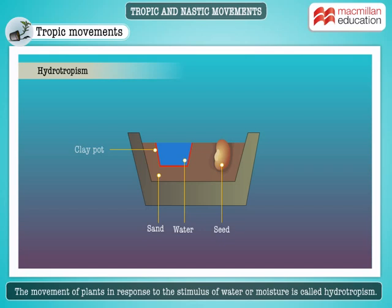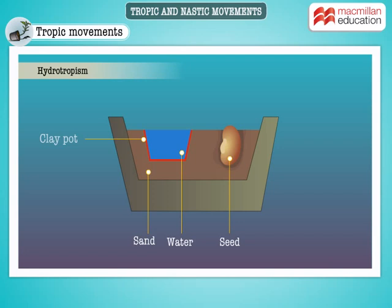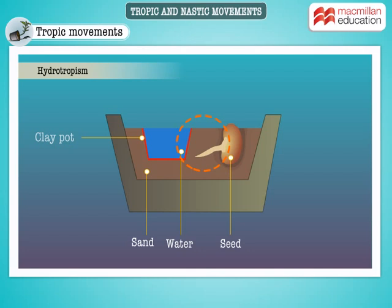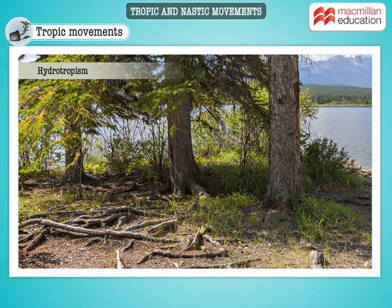The movement of plants in response to the stimulus of water or moisture is called hydrotropism. Take a look at this setup — the bean seed here has its root growing towards water. Water is the stimulus that has led to this directional growth movement of the root. Watch these visuals to understand hydrotropism better.